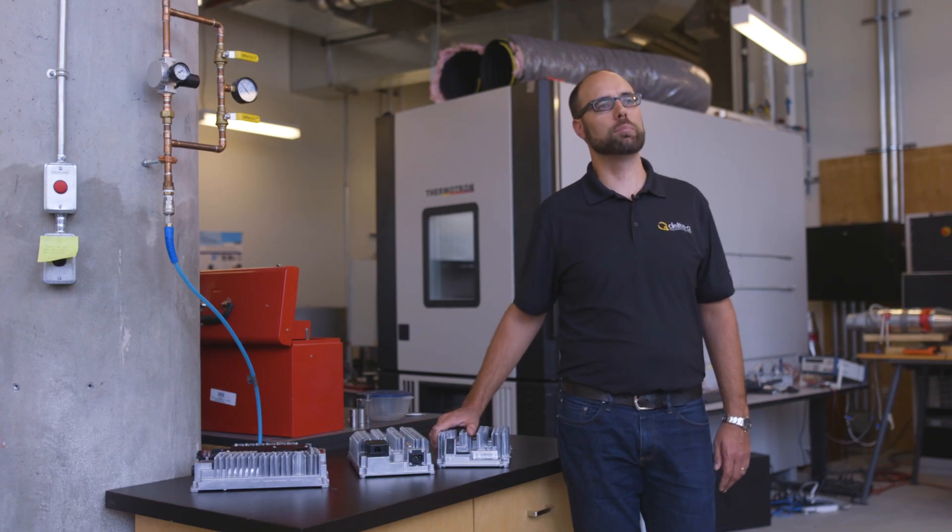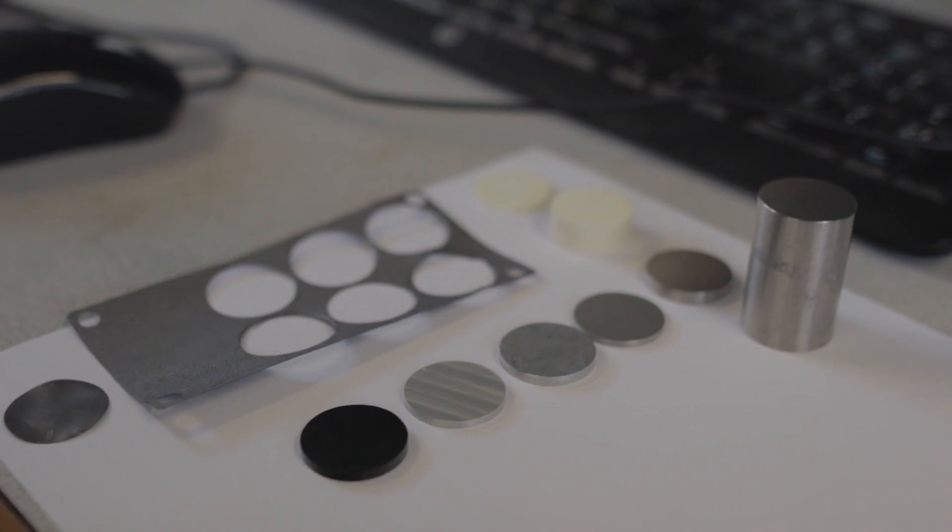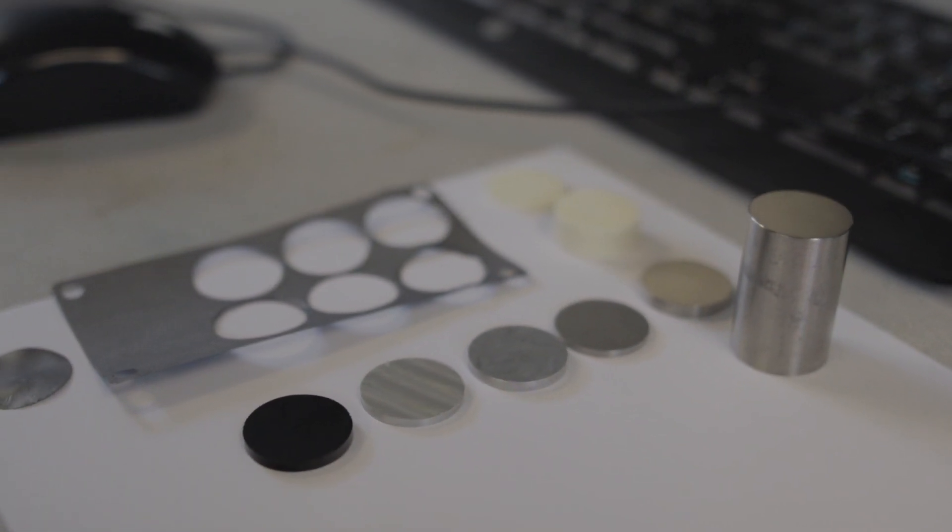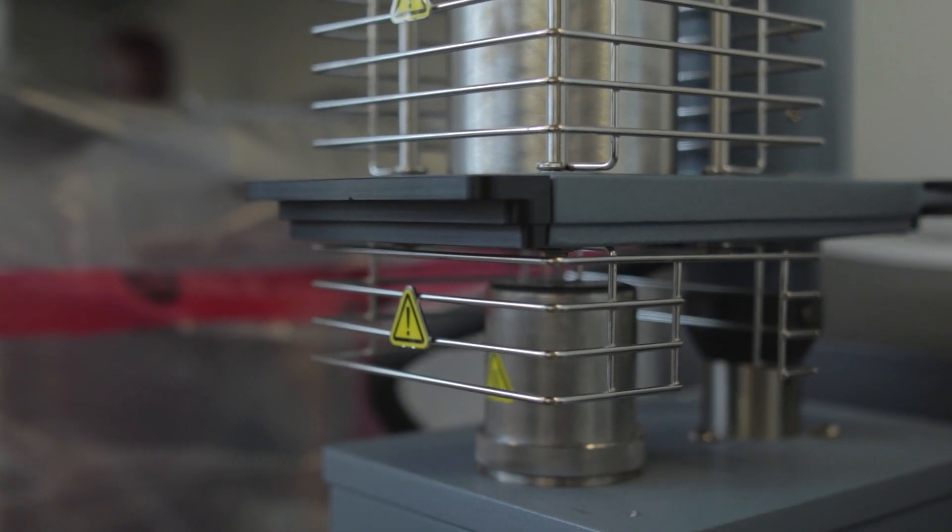As part of our push to expand electrification and displace fossil fuels, we need to make electric vehicles more convenient. The focus of this research is to take our battery chargers today and make them more thermally efficient, to take the heat out so we can reduce the size, double the density, and get more power in a smaller space.